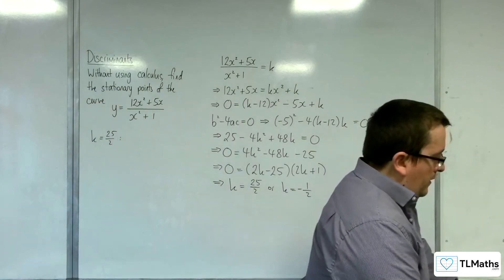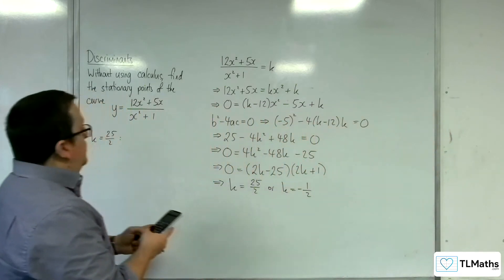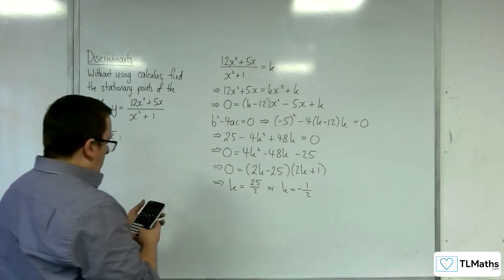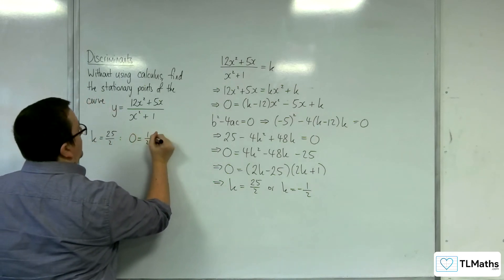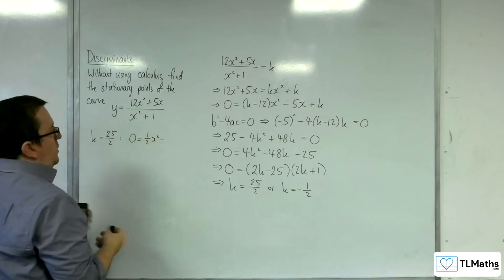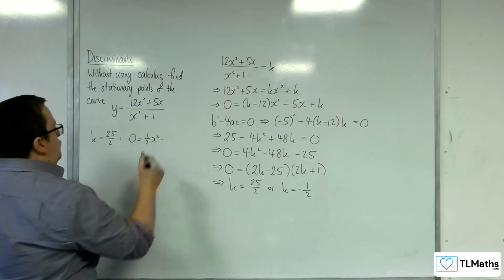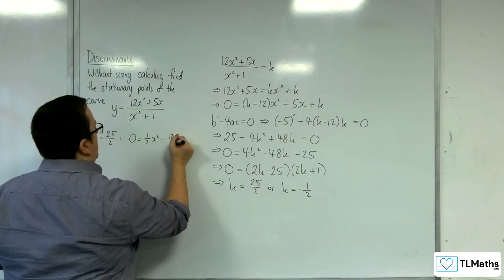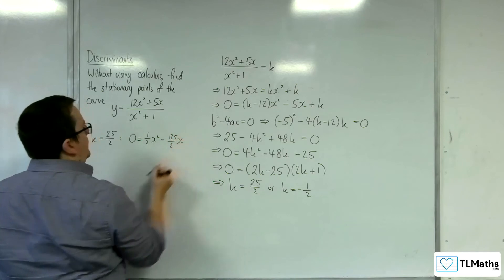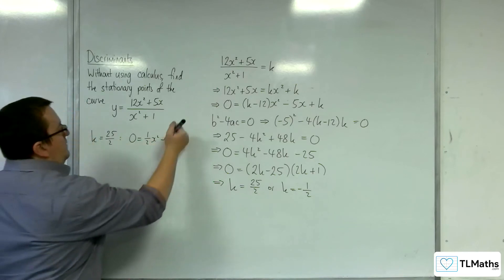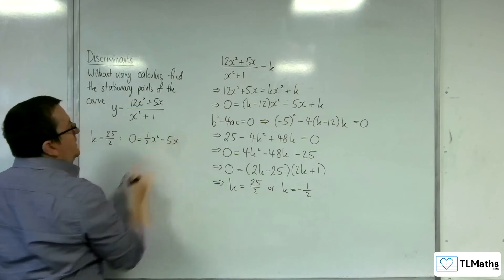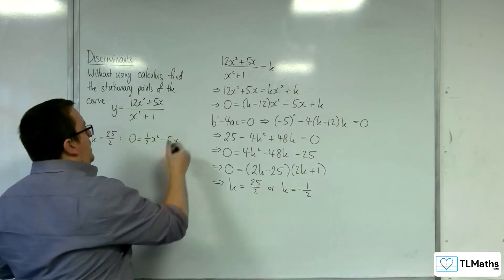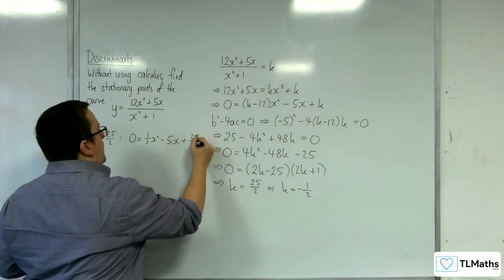We've got 25 halves take away 12. So, 0 equals 1 half x squared, take away 125 over 2x. Oh, sorry, there's no k though, is there? Sorry, that was my mistake. Take away 5x, and then plus 25 halves.